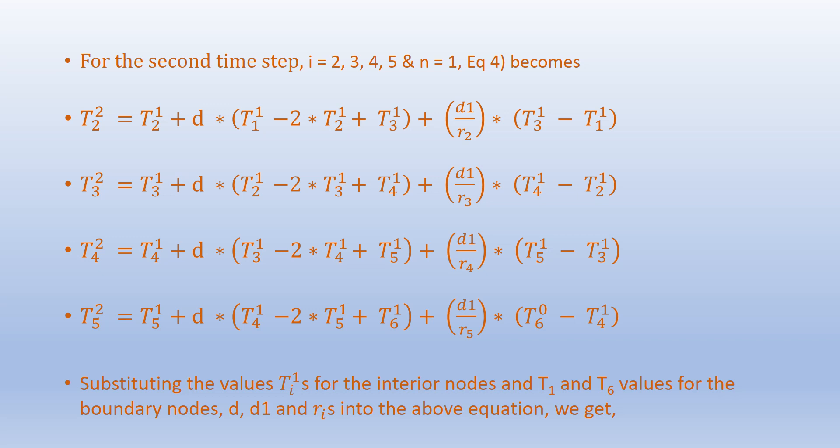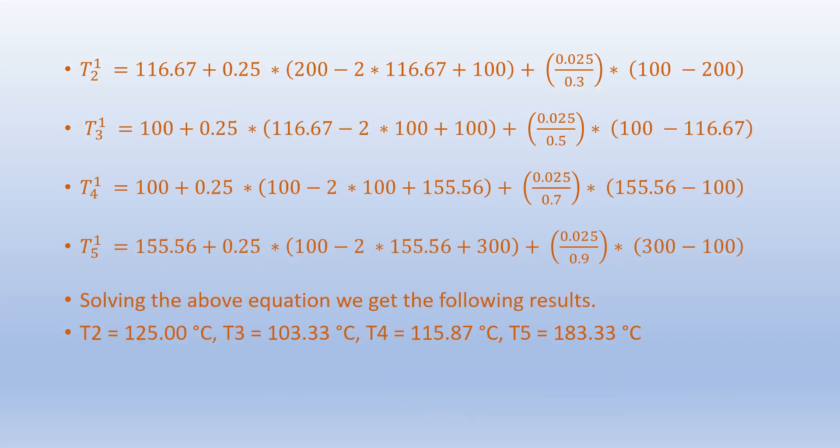We again substitute the values of T_i^1 for the interior nodes and T1 and T6 for the boundary nodes, along with D, D1, and r_i into the equation. The results are: T2 = 125°C, T3 = 103.33°C, T4 = 115.87°C, T5 = 183.33°C.